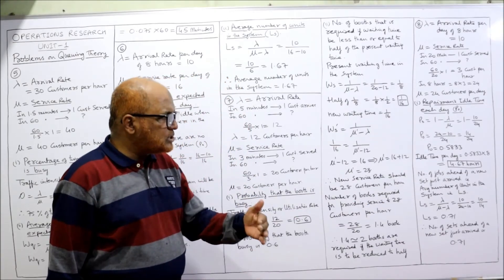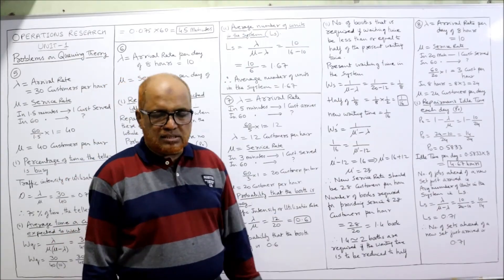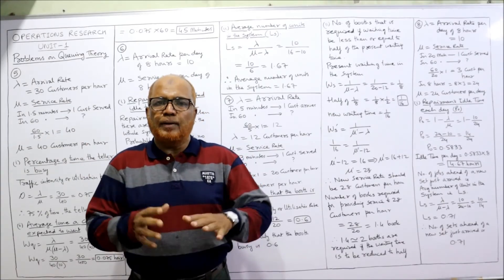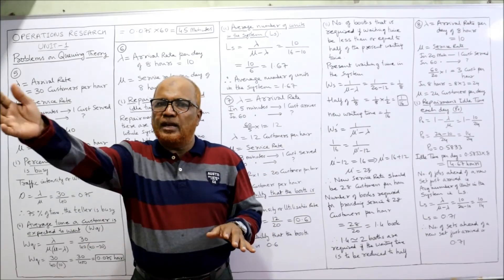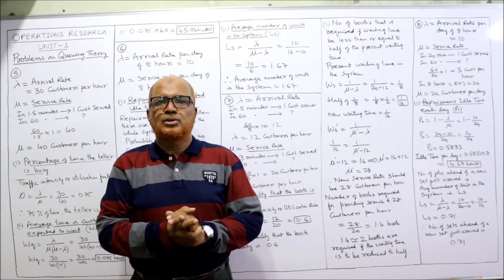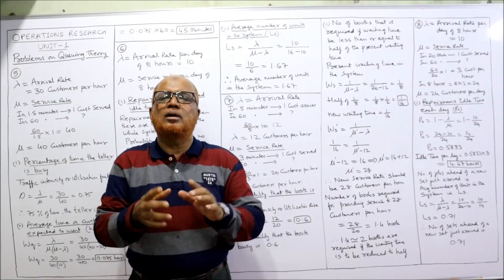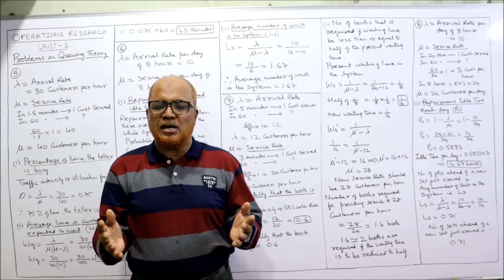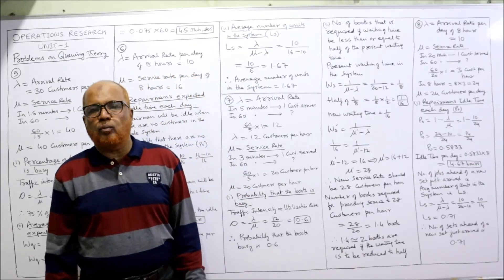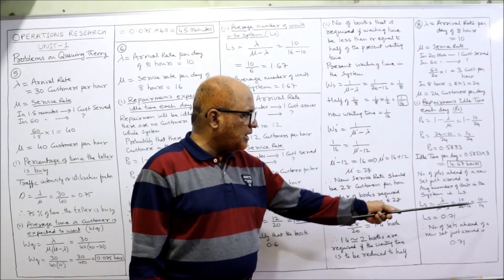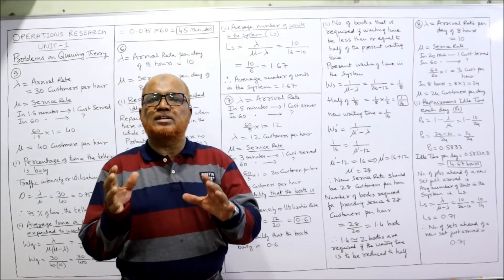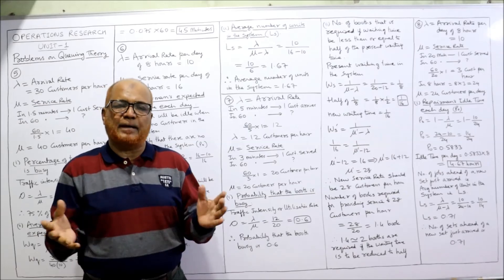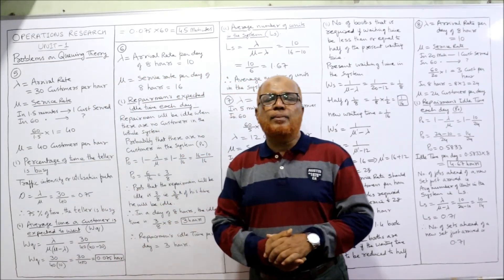Last question: number of jobs ahead of a new set just arrived — that is the average number of units in the whole system when a new TV set has just arrived, which is Ls. The formula is Ls = lambda divided by (mu minus lambda) = 10 divided by (24 minus 10) = 10/14 = 0.71. So 0.71 is the number of units in the system just before a new TV set arrives. This is the end of problem number eight.